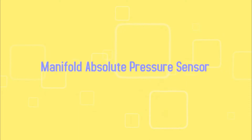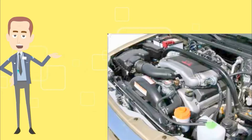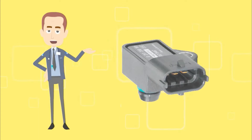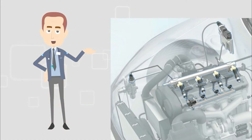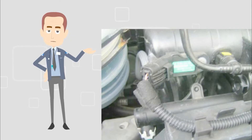Manifold absolute pressure sensor is a key sensor because it senses the engine load. This sensor measures air pressure, which tells the ECM the current altitude of the vehicle. With the help of this information, the ECM can adjust the ignition timing and fuel enhancement. It is bolted on the intake manifold or linked with a vacuum pipe from the intake manifold.